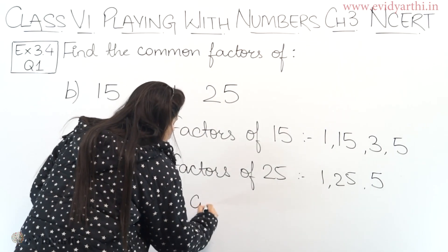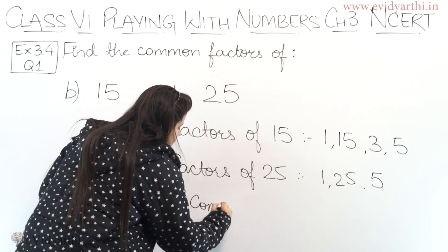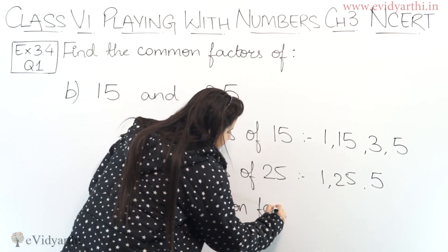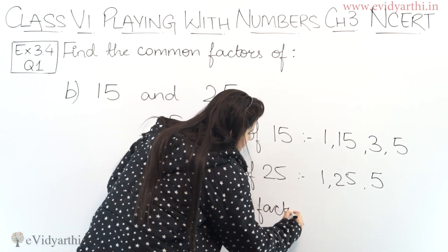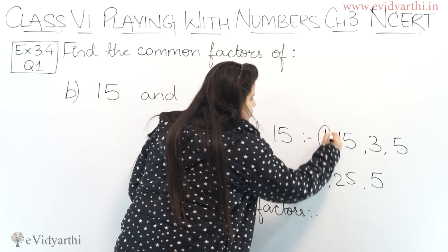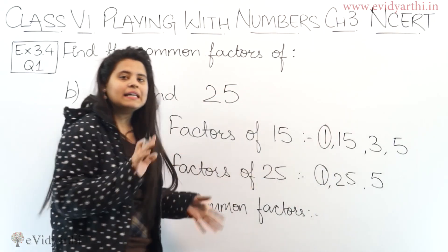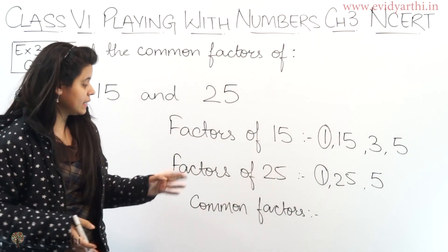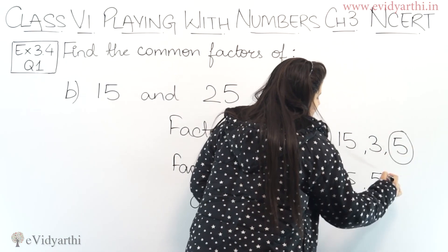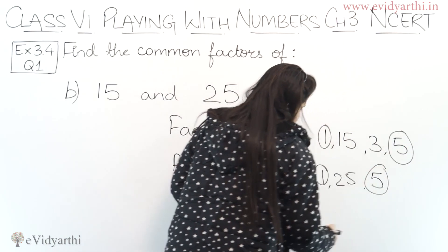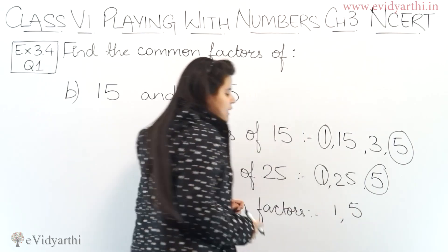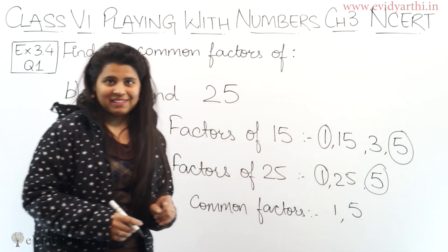Now let's go to common factors. We can see that 1 is a common factor of all numbers. Then we have 5, which appears in both lists. So 1 and 5 are the common factors of 15 and 25.